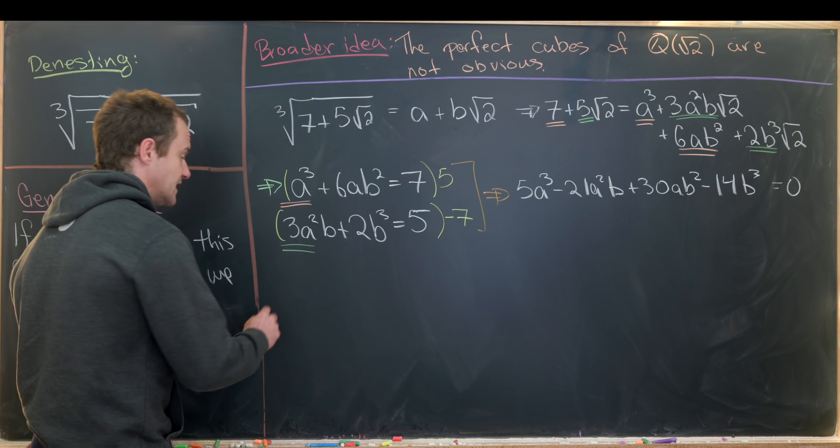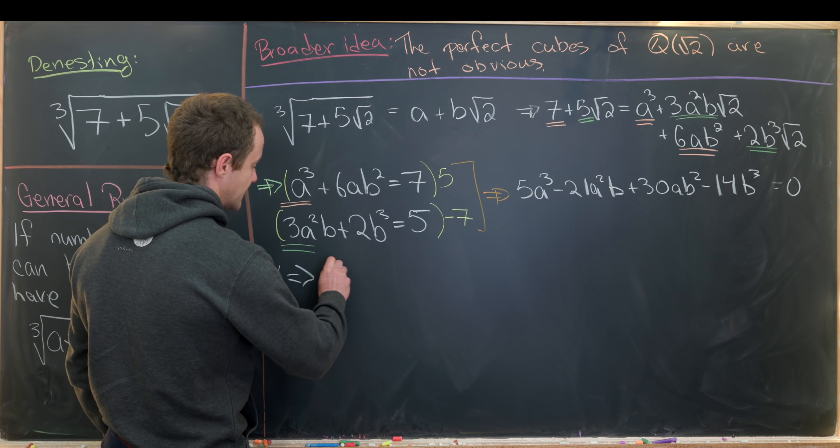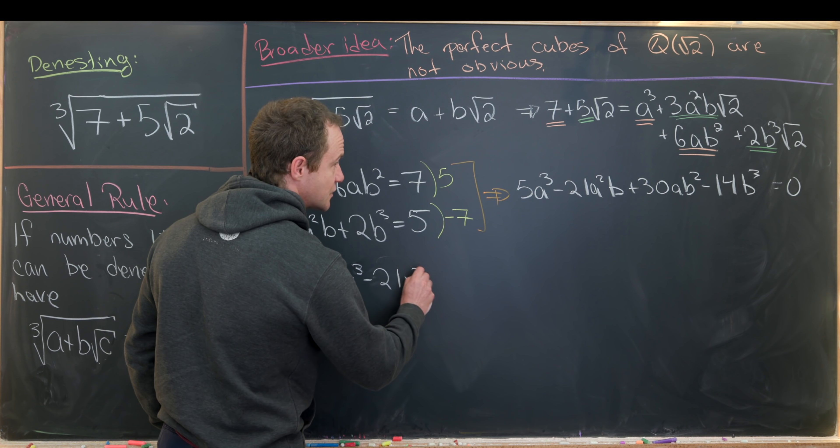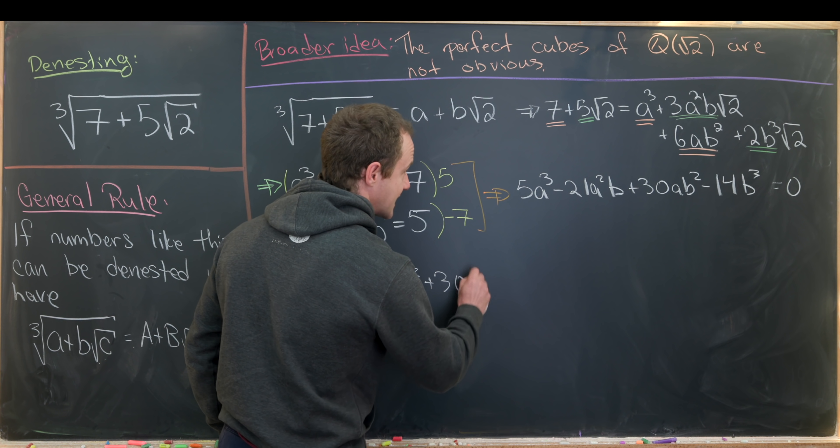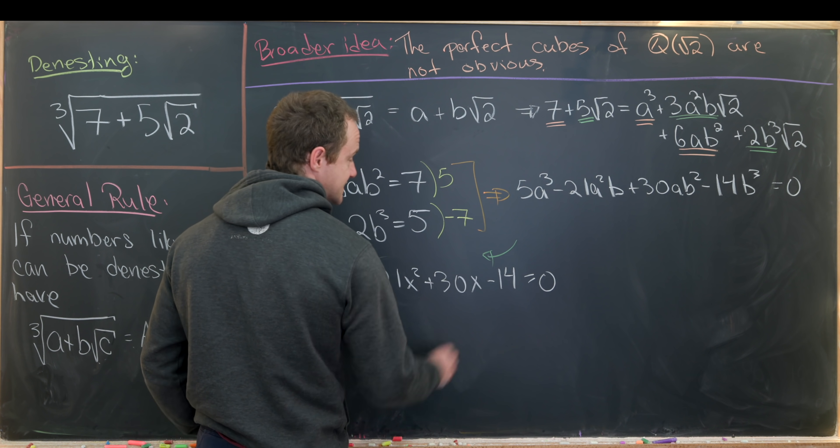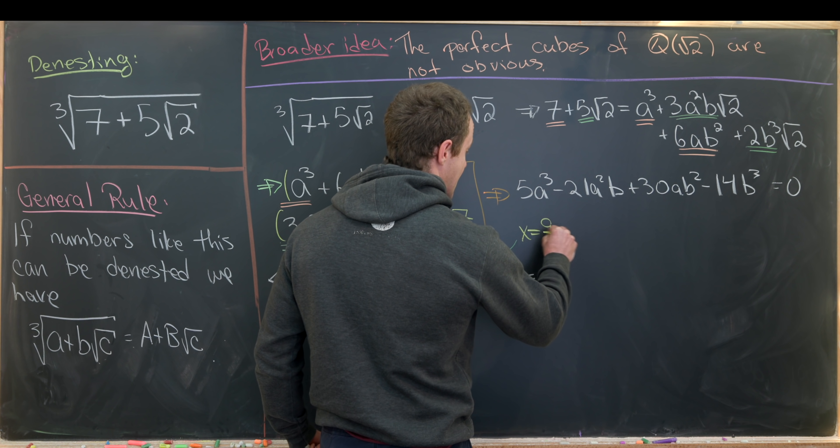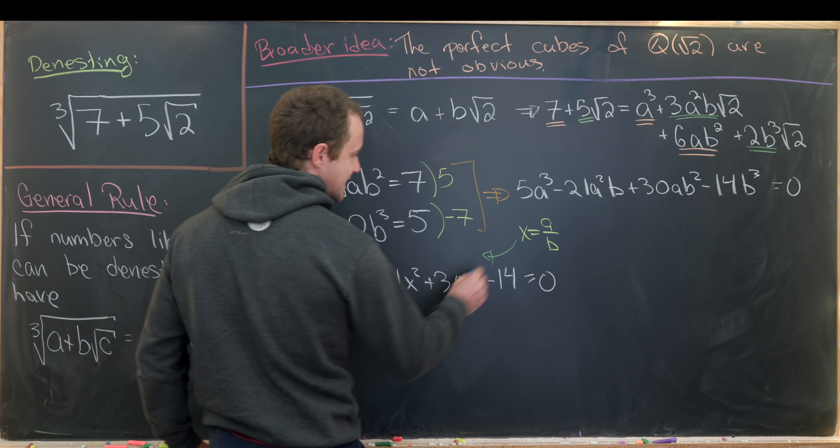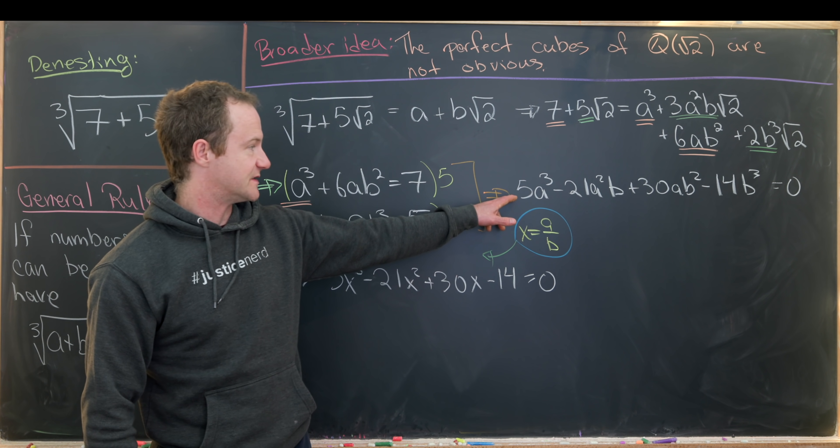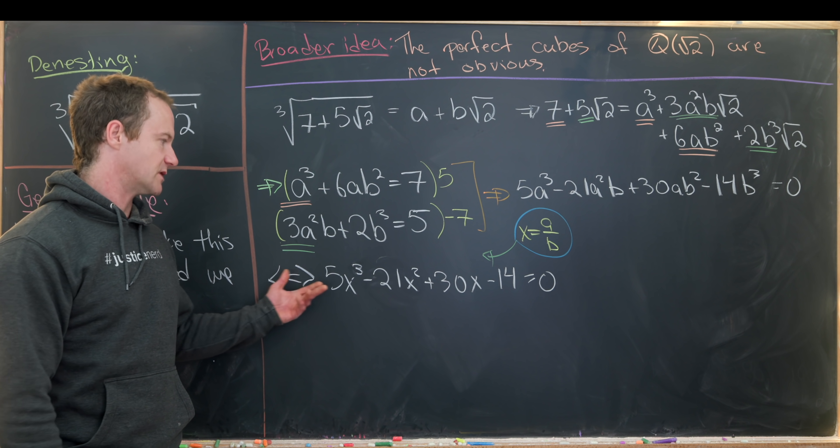But now notice that that equation being equal to zero is equivalent to the polynomial equation 5x cubed minus 21x squared plus 30x minus 14 equals zero. Where let's see we have x equals a over b. So you might say well how can we go from one of these to the other? Well if we just divide this entire equation by b cubed then we'll get this equation.